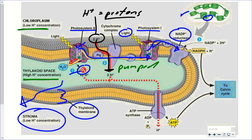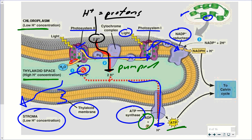Not only are there more hydrogen ions inside the thylakoid than outside, but there are also more positive charges inside — so they want to move into the stroma. The only way they can get there from the thylakoid space is by passing through ATP synthase, a transmembrane protein in the thylakoid membrane that is also an enzyme. As the protons travel through ATP synthase, that provides the energy to combine ADP and phosphate, form a bond, and produce ATP — the all-important usable chemical energy for the plant.